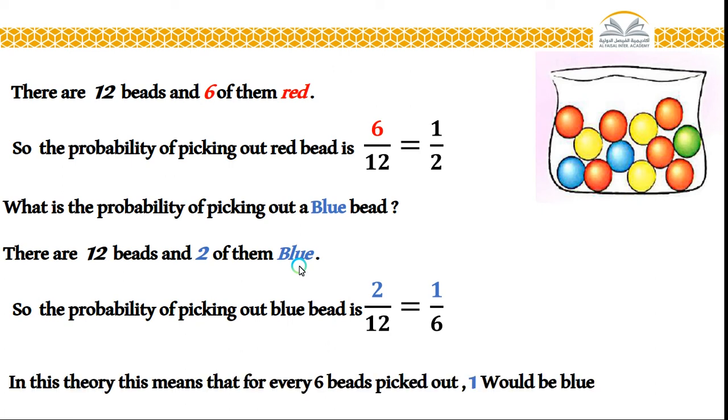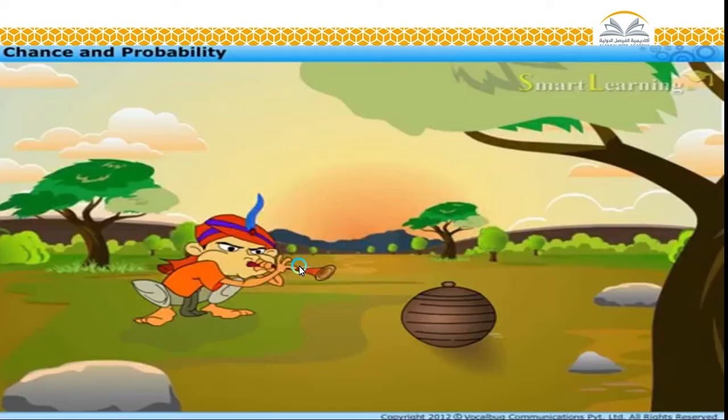Now, in this theory, this means that for every 6 beads picked out, 1 would be blue. Is it clear? So look at this video to more explain also the concept of probability.